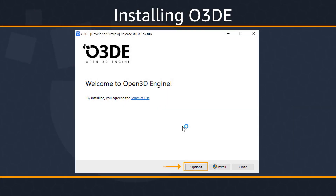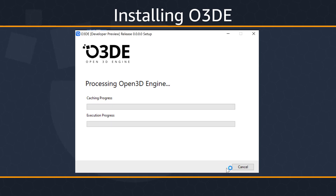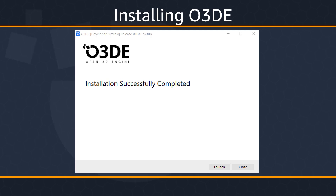If you'd like to change the installation location, choose the Options button. Let's click the Install button to start the installation process. During installation, the installer downloads additional packages as needed. The process can take some time depending on your internet connection speed. Note that additional windows might open and close during installation. Upon successful installation, the installer displays the message: Installation Successfully Completed.